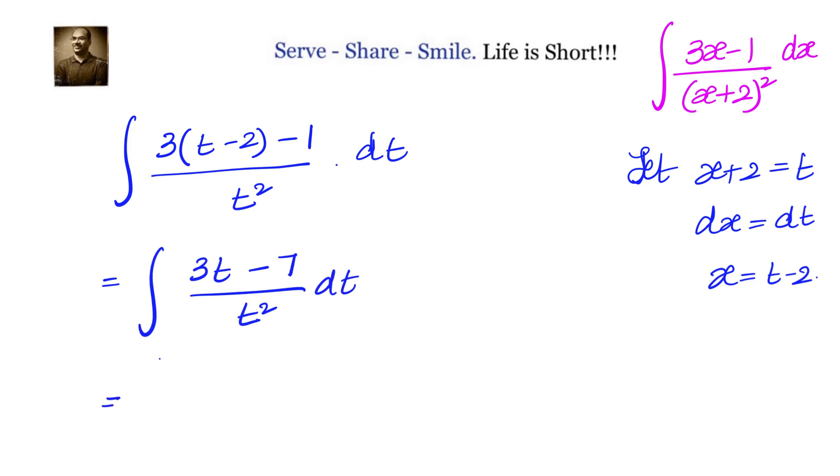Let's separate them. We will have integral of 3t by t square dt minus integral of 7 by t square dt. Now t and t square, one t will be left out in denominator. So this becomes integral 3 dt by t minus integral of 7, we have 1 by t square dt.